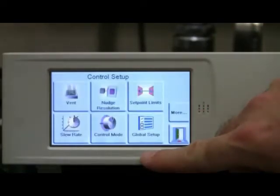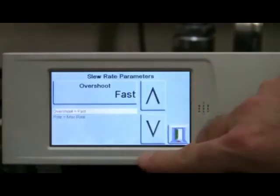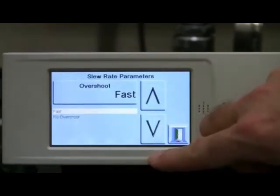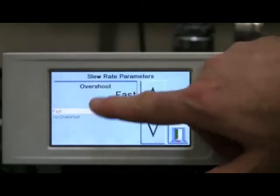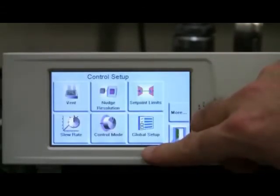PACE 5000 allows you to change the control parameters to either maximize speed or, for high precision requirements, control to the set point with no overshoot. For this calibration run, we will select fast.